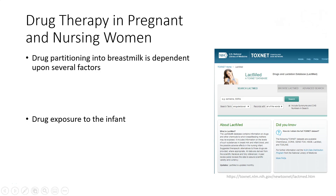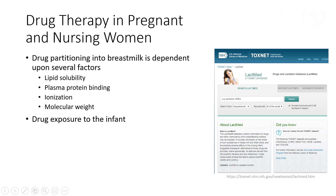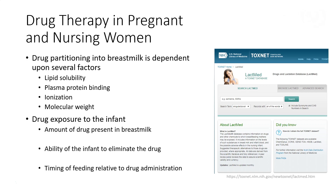Following birth, we have to be concerned with drug getting into breast milk and subsequently being ingested by a nursing infant. Drug partitioning into breast milk is dependent upon several factors including lipid solubility, plasma protein binding, ionization, and molecular weight. Once the drug gets into breast milk, we have to consider how much gets into breast milk, how much is actually dosed to the baby during feeding, whether the infant is able to metabolize or eliminate the drug, and finally the timing of feeding relative to when the mother took the drug.